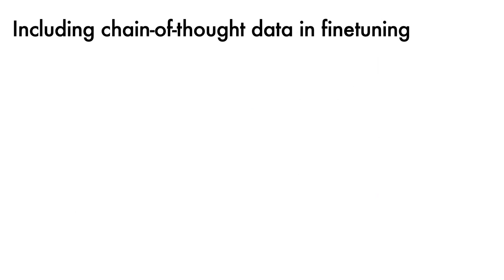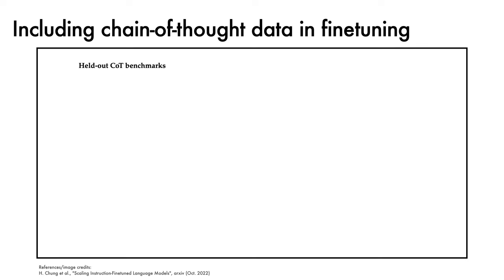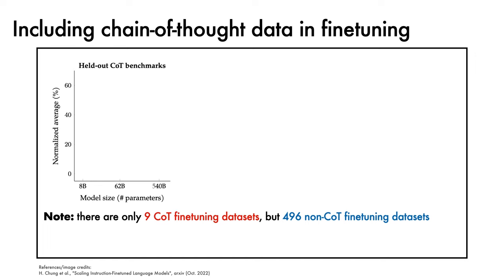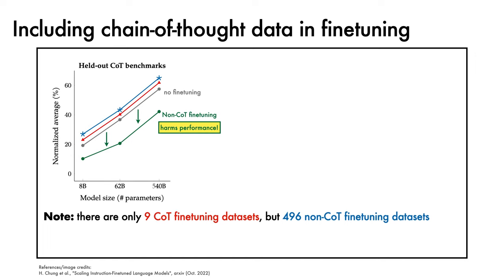To understand the importance of including chain-of-thought fine-tuning data, results are first reported on held-out chain-of-thought benchmarks. It's useful to bear in mind here that there are only 9 chain-of-thought fine-tuning datasets, whereas there are 496 non-chain-of-thought fine-tuning datasets. On the x-axis we plot model size, and on the y-axis, normalised average score. Relative to no fine-tuning, fine-tuning solely on non-chain-of-thought instructions actively harms performance. Fine-tuning on chain-of-thought instructions boosts performance, while fine-tuning on a mixture of both does best overall.